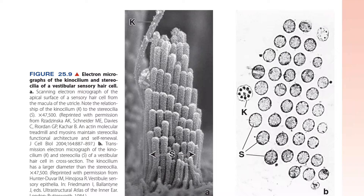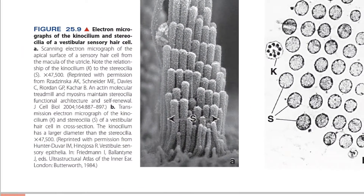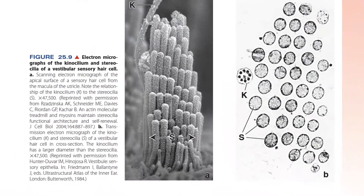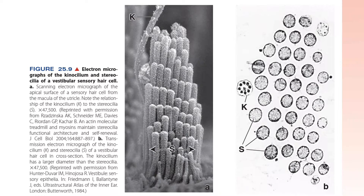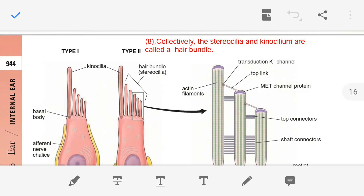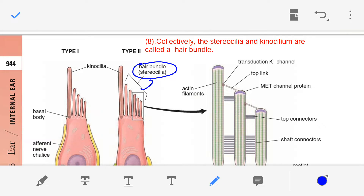This is an electron micrograph of the kinocilium and stereocilia of vestibular sensory hair cells. 'S' labels indicate the stereocilia and 'K' indicates the kinocilium. Figure B shows the cross section of stereocilia and the kinocilium. Collectively, the stereocilia and kinocilium are called the hair bundle. Together, stereocilia plus kinocilium form the hair bundle.